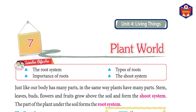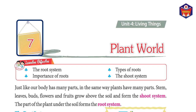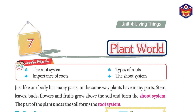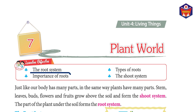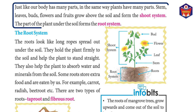Unit 4: Living Things, Chapter 7: Plant World. Learning objective — the root system, types of roots, importance of roots. Just like our body has many parts, plants also have many parts. Stem, leaves, buds, flowers, and fruits grow above the soil and form the shoot system. The part of the plant under the soil forms the root system.